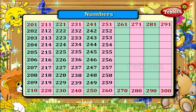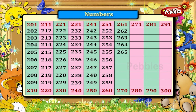Numbers between 261 and 270. They are 262, 263, 264, 265, 266, 267, 268 and 269.